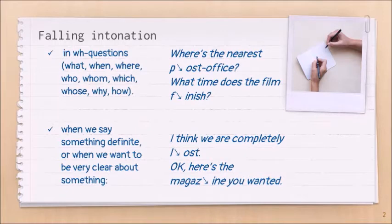Where is the nearest post office? What time did the film finish? Falling intonation is used when we say something definite or when we want to be very clear about something. I think we are completely lost. OK, here is the magazine you wanted.